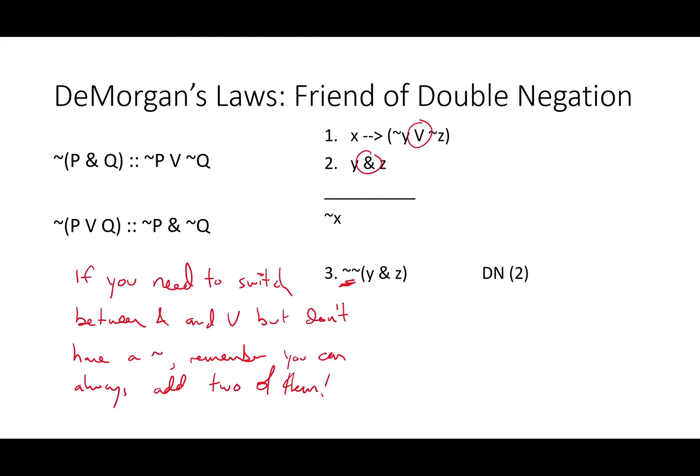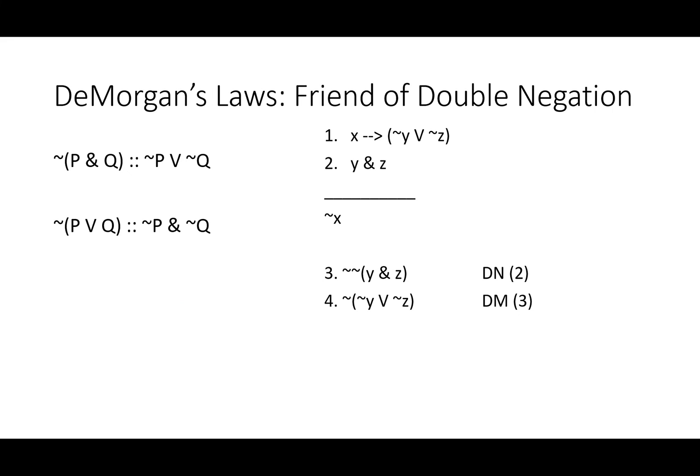But it takes a double negation and a DeMorgan's to solve that with logic. So first we add two negations. If you need to switch between ampersand and V, but you don't have any negations, remember you can always add two of them at a time with double negation. DeMorgan's only works on negated things. With those negations, we can now do DeMorgan's and get it's not the case that not Y or not Z. We've taken one from outside, spread it across to each side of our new disjunction. If we want to, we could also simply DeMorgan's line one and get it's not the case that Y and Z. We've got its opposite in line two. Either way, we're set up for a modus tollens and getting not X.